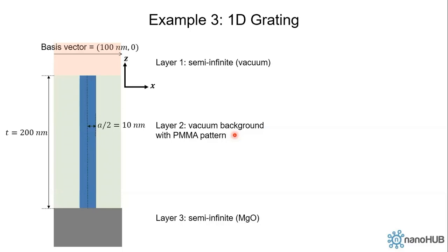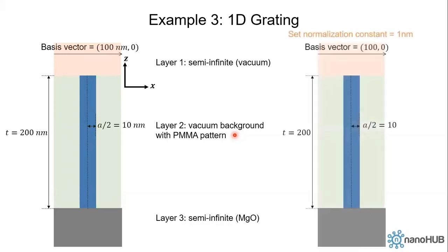This time we're going to write our own control file so we can choose the normalization constant at our convenience. I choose the normalization constant to be one nanometer. So the basis vector becomes 100, 0 unitless, the thickness of the middle layer is 200 unitless, and the half width of the PMMA pillar is 10 unitless.